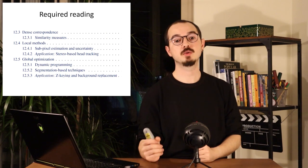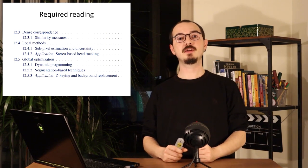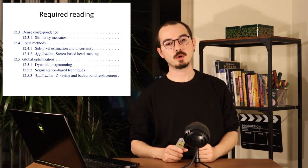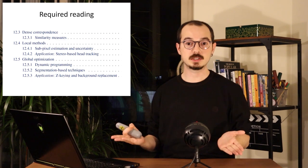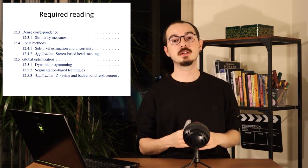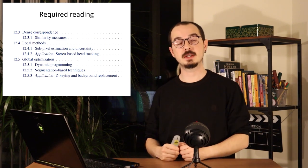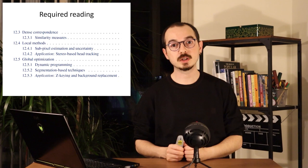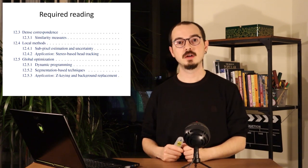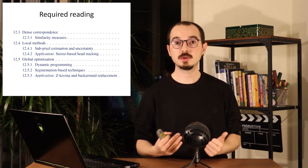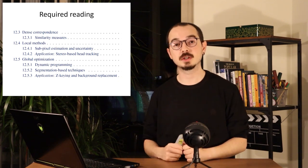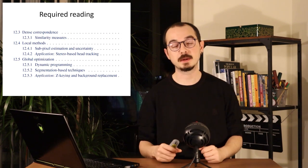Our required reading is section 12.3, 12.4, and 12.5 — dense correspondence, local methods, and global optimization. Today we didn't cover global optimization, but the textbook gives a brief and nice introduction to different approaches in this field. This is the end of our technical discussions in this class — thank you for watching.